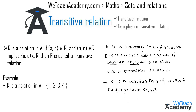For r to be transitive, it must satisfy: if (a,b) belongs to r and (b,c) belongs to r, then (a,c) must also belong to r. However, r does not satisfy this condition — the pairs (2,3) and (3,4) are present, but (2,4) is not in r. Therefore r is not a transitive relation.